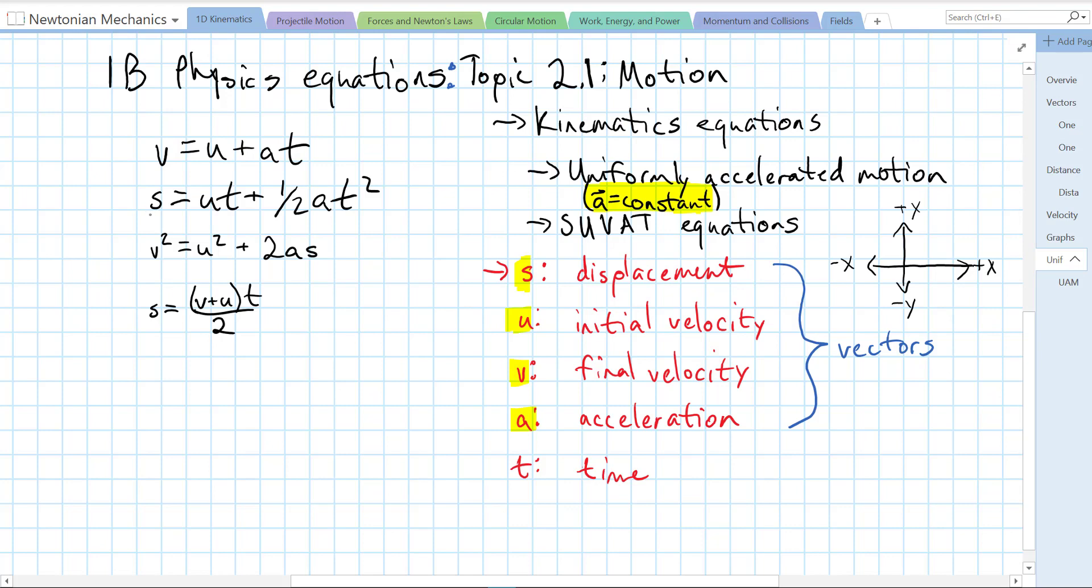Displacement, S equals UT plus 1 half AT squared. This tells us our displacement is the initial velocity times time, plus 1 half times the acceleration times time squared.